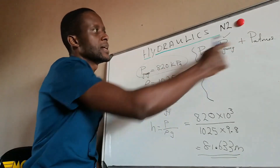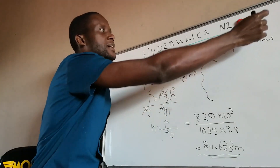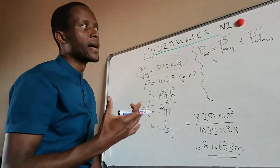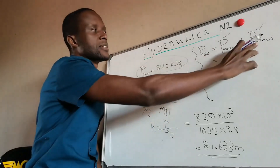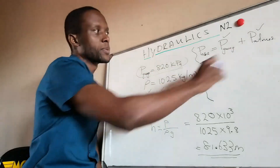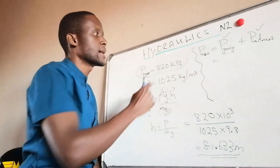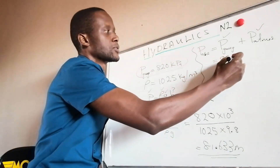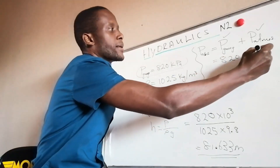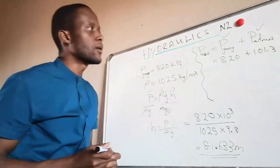Our gauge pressure is given as 820 kilopascal. Atmospheric pressure is a constant of 101.3 kilopascal, which you can check on the information page. So we take 820 plus 101.3 — all in kilopascal — and add those up to get our absolute pressure.